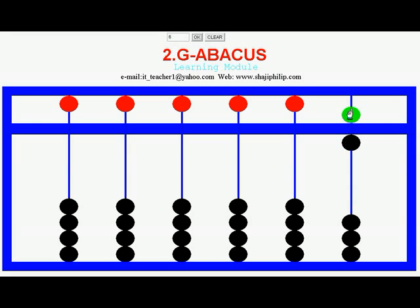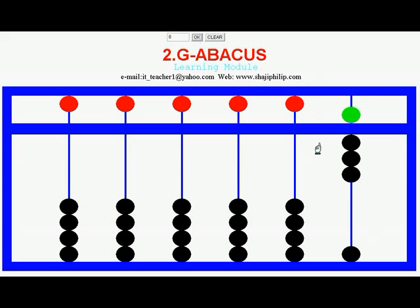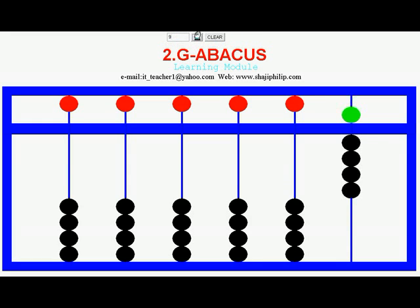1 Heaven bead is set plus 1 Earth bead is set, so it is 6. To represent 7: 5 plus 2 equals 7. To represent 8: move the Heaven bead down — 5, 6, 7, 8. To represent 9: all the beads in the 1's beam are set — 5, 6, 7, 8, 9. This is the maximum single digit representation.